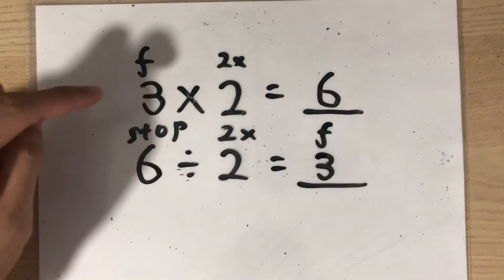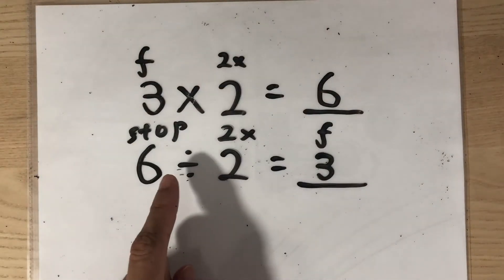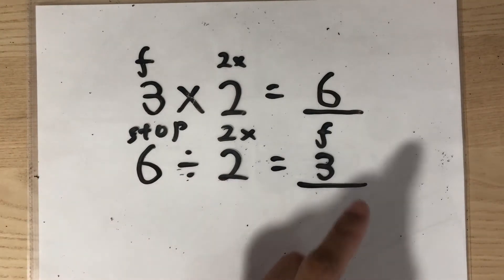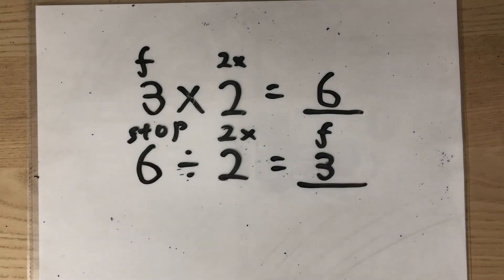Do you notice something again? The times and the divide are opposites of one another. 3, 2, 6. 6, 2, 3. So knowing this, let's move on to another example.